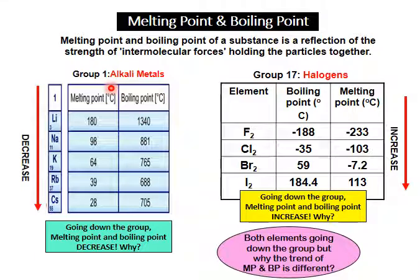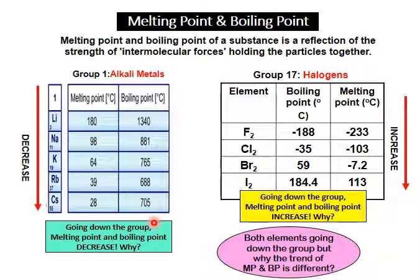Looking at group 1 alkali metals — when going down the group, what happens to the melting point and boiling point? Going down the group, melting point and boiling point decrease.